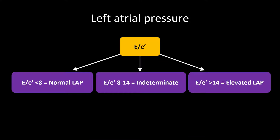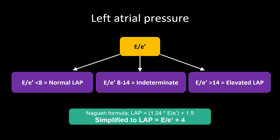Let's talk about some important numbers. If your E over E-prime is less than 8, you have a normal left atrial pressure. If your E over E-prime is greater than 14, you have an elevated left atrial pressure. If it's between 8 and 14, it's tricky — but in our experience, a value closer to 8 suggests lower LAP and a value closer to 14 suggests higher LAP. To be clear, E over E-prime does not equate to your left atrial pressure itself. For the POCUS nerds, the NAGWA formula allows you to calculate an LAP from the E/E-prime ratio: LAP equals E over E-prime plus 4. The E/E-prime cutoffs identified here are the important numbers to remember.